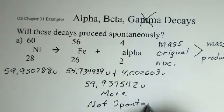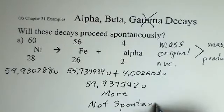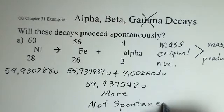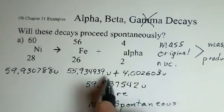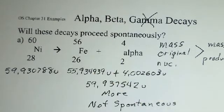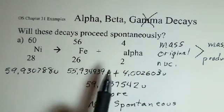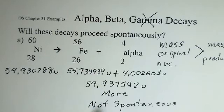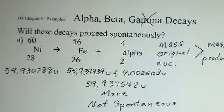There's not enough mass in the nickel to create the mass in the proposed products here. So somebody suggests this might be a possible alpha decay. We can say no. It's not going to happen in the real world. It's not spontaneous. We don't have enough mass.